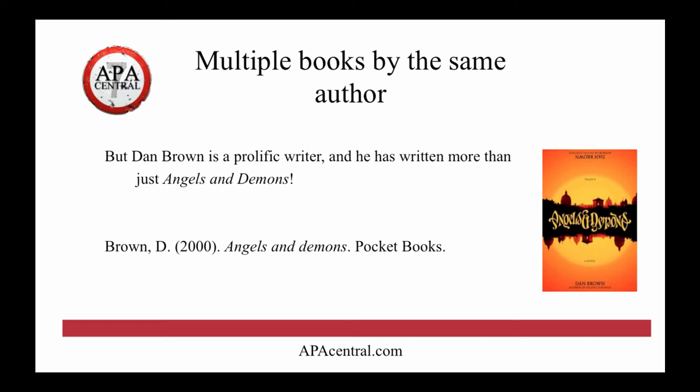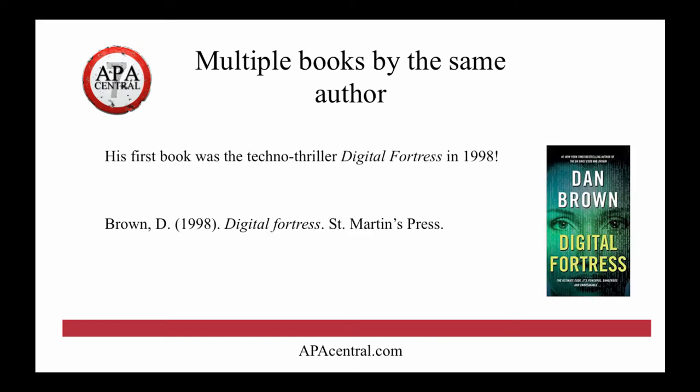What about multiple books by the same author? Dan Brown's a prolific writer, and he's written more than just Angels and Demons. For example, his first book was the techno thriller Digital Fortress in 1998, and so that's what the reference for that would look like. It's author's last name, first initial, the year of publication, then the title of the book in italics, and then the publisher. You'll notice too that 'Digital Fortress' when used in a sentence both words are capitalized, but in a reference, 'Fortress' is not capitalized. That's the difference between title case and sentence case.